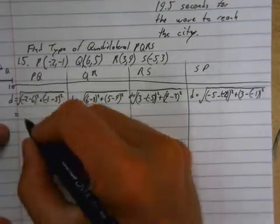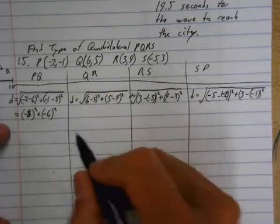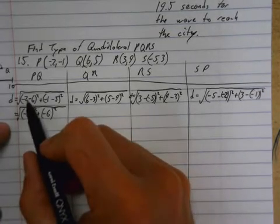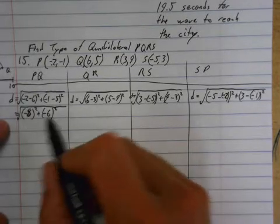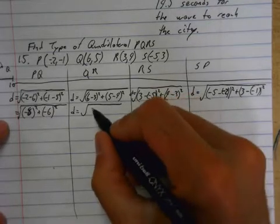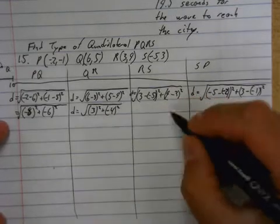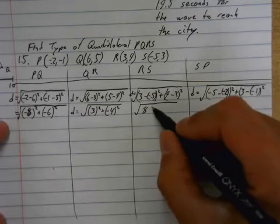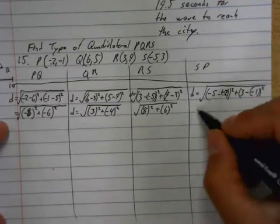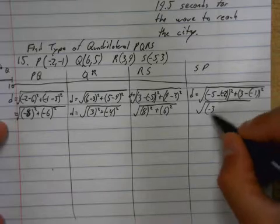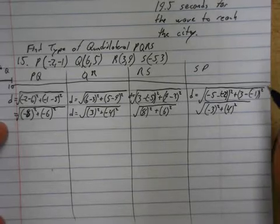Now the next thing I'm going to do is calculate all of these. So I get negative 8 squared plus negative 6 squared. Now why am I doing this? Because I want these little things in here. This is my x minus x, this is my y minus y, so this is my run and this is my rise. Once I've got these things it makes it really easy to get slope. So in here I get 3 squared and negative 4 squared, and here I get 8 squared and 6 squared, and here I get negative 3 squared and 4 squared.